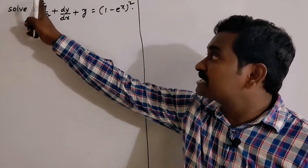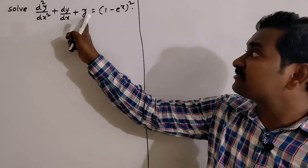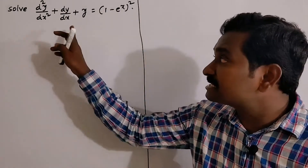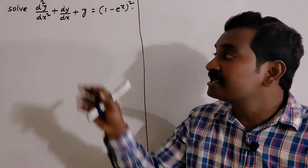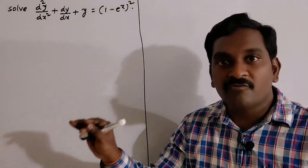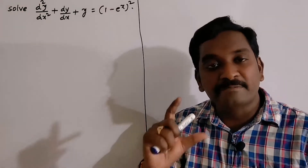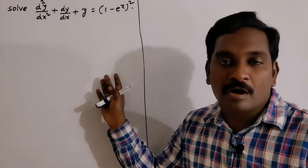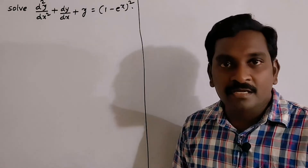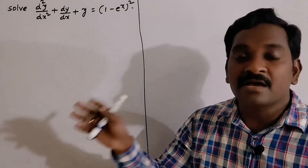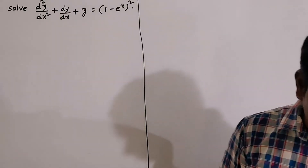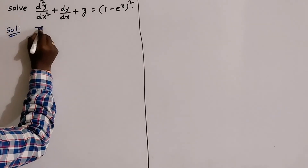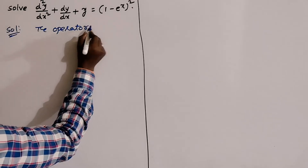The next problem: solve d²y/dx² + dy/dx + y = (1 - eˣ)². The operator form is not provided in the statement, so first we have to reduce the given differential equation into operator form. After that we find the complementary function, then the particular integral. Finally, the general solution is y = complementary function + particular integral.